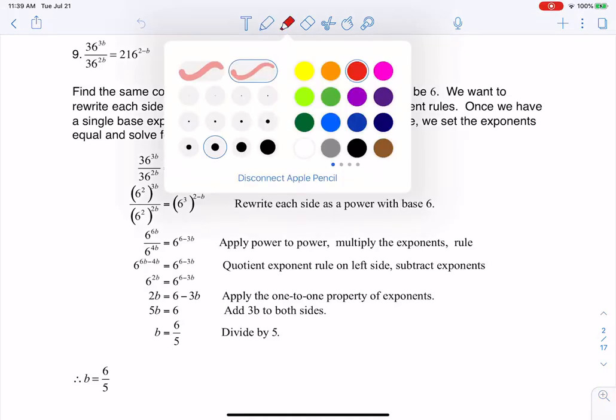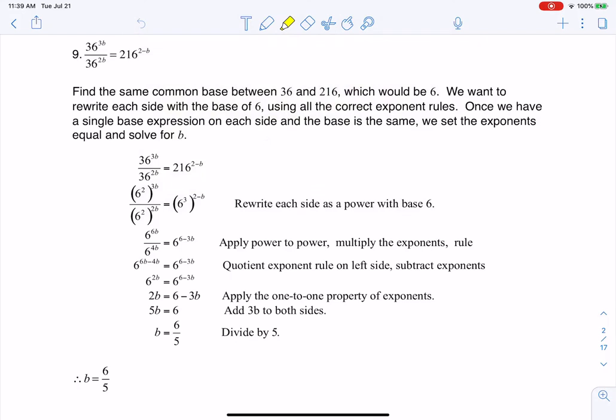When I take a look at this, I've got an exponential equation because I can see my variable is up here in my exponent. And they've got different exponents, right? You see 3b, 2b, and 2 minus b. And that's all fine and good,